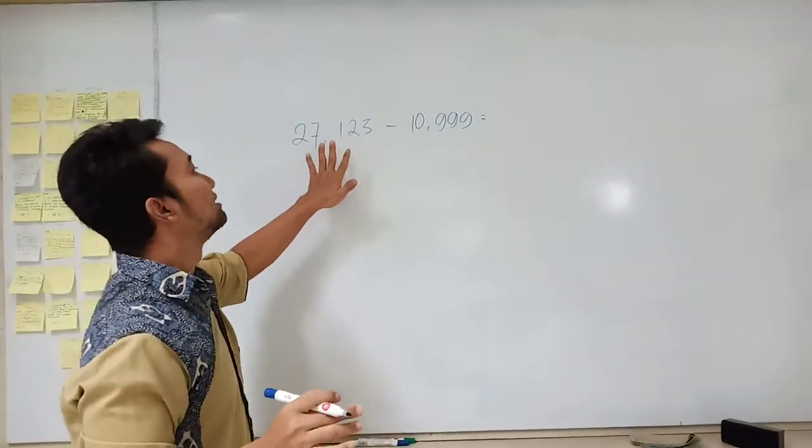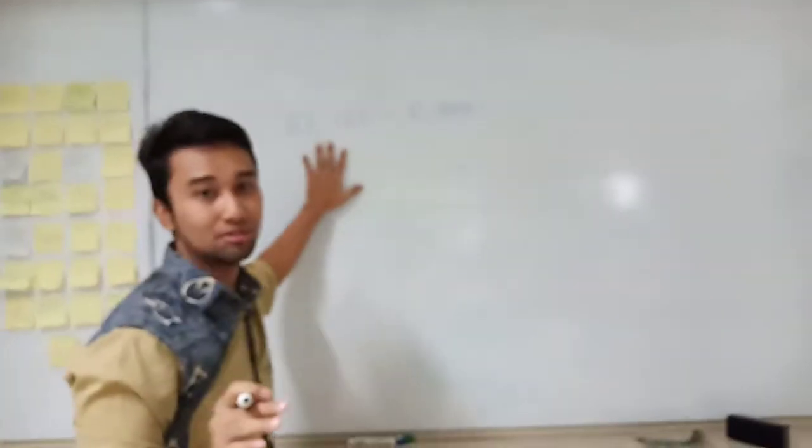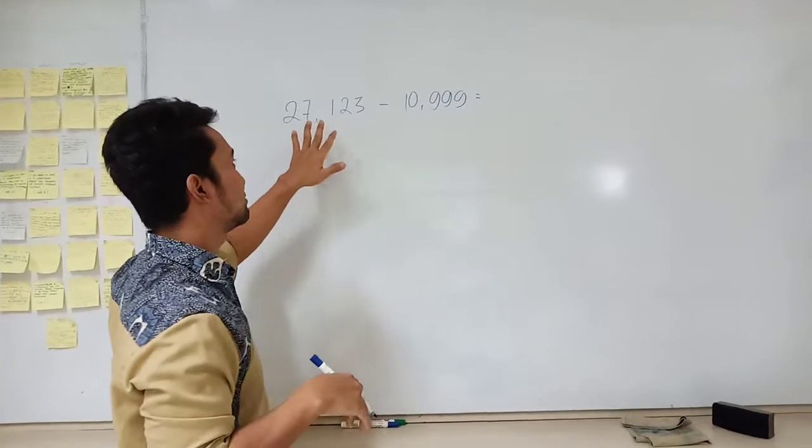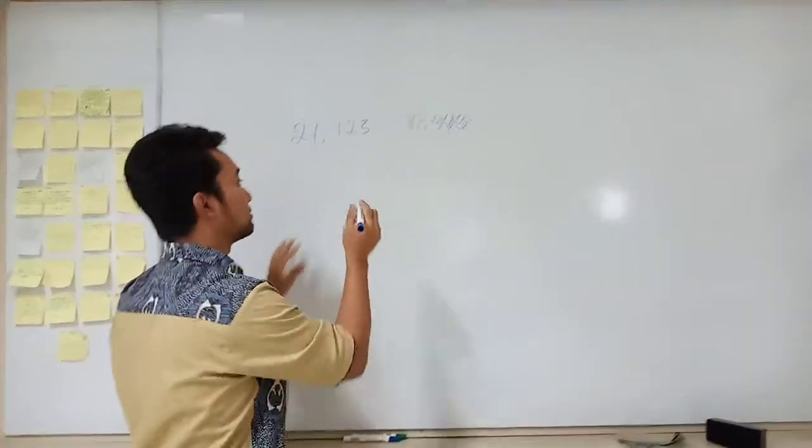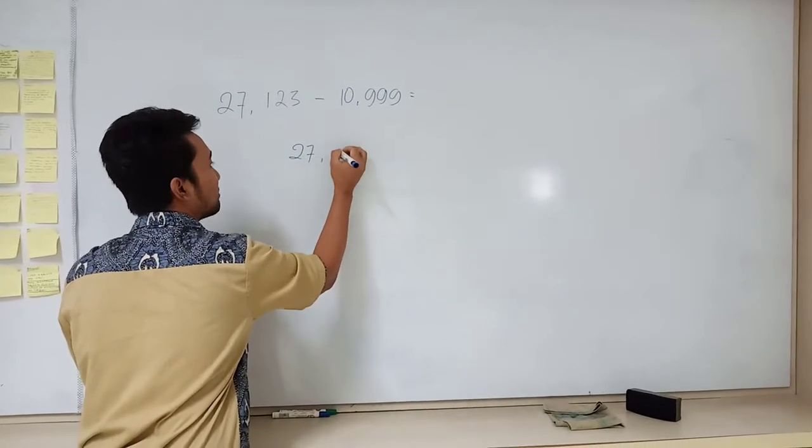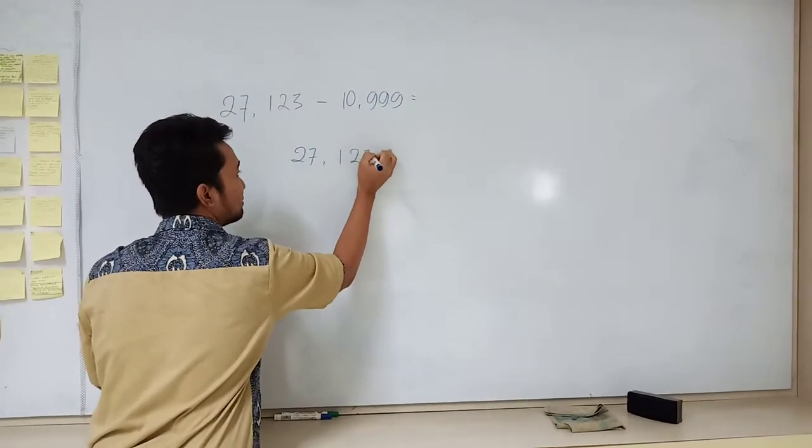So what is the answer? Again, we have to write the first number because this subtraction must be careful. So this one must be put as a top number. 27.123.